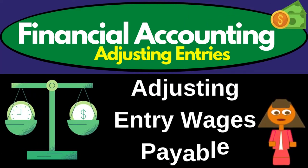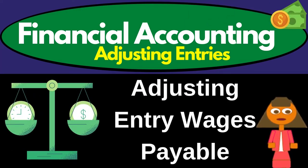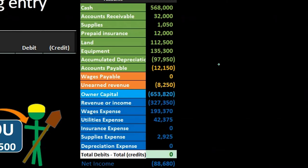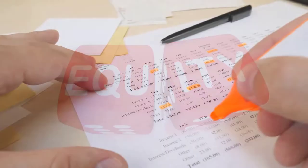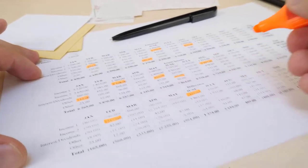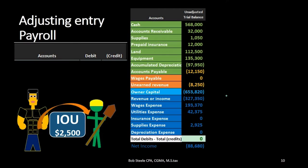In this lecture we're going to record the adjusting entry related to payroll. We're going to record the journal entry up here on the left hand side and post that to the trial balance over on the right hand side. The trial balance is organized in terms of assets, then liabilities, then equity, and the income statement including revenue and expenses, with all blue accounts including the income statement being part of equity. We'll first find the accounts related to a payroll adjusting entry and then explain the process.